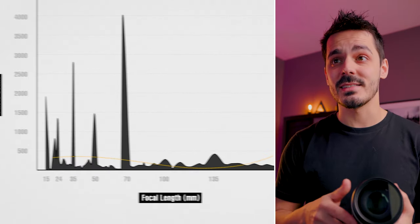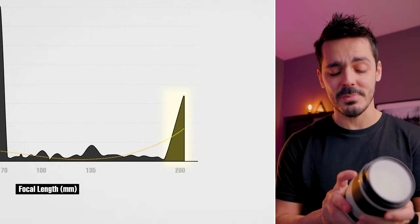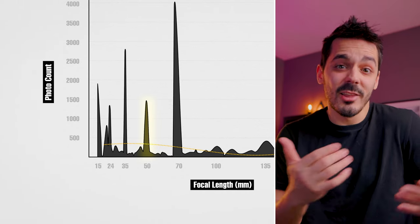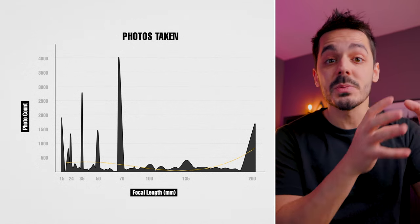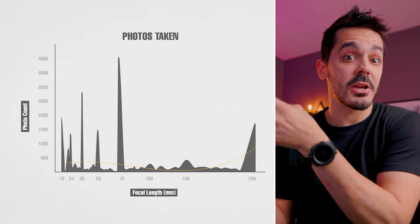Going down the rest of the list, 200mm is my next most-used focal length — that makes sense because if I want to get some far-away details, I'm going to want to zoom all the way in. Fifth on the list was 50 millimeters. I honestly thought it would be my second or third most popular. I excluded my prime lenses from this data because I wanted a true representation of, if I had an infinite range of focal lengths to choose from, what would I choose?